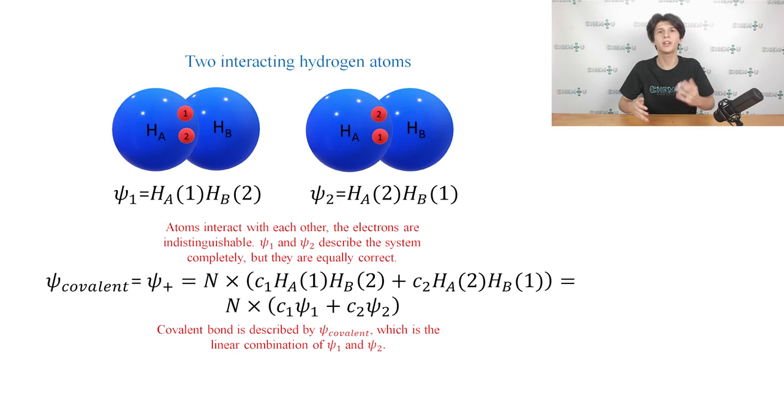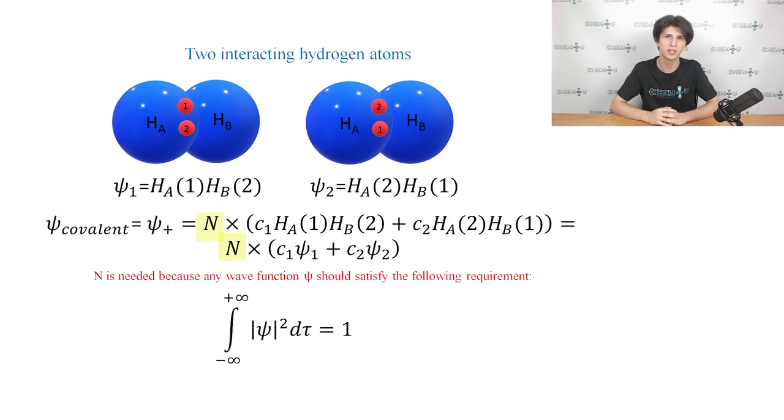Ultimately, we can describe the covalent bond between the hydrogen atoms by a linear combination of wave functions ψ1 and ψ2. Don't be afraid of this mathematical term. The linear combination is just the sum of functions that are multiplied by some factors denoted as c with corresponding index. So, we get the wave function that describes the covalent bond, and we call it ψ-covalent or ψ+. Here, the capital N represents what we call a normalization factor.